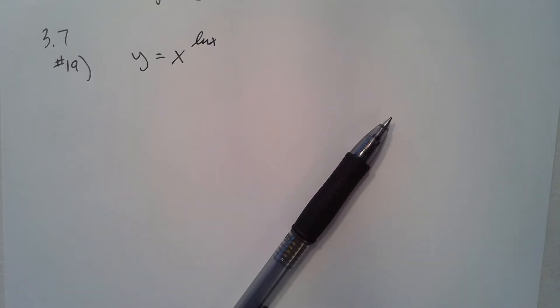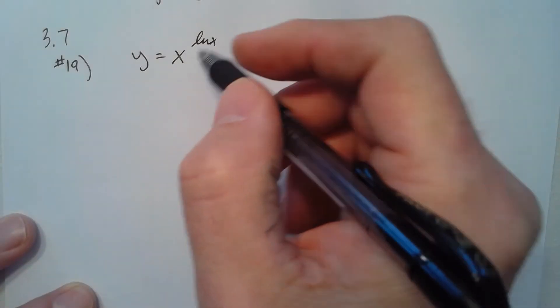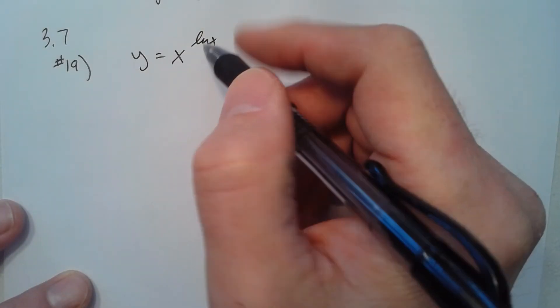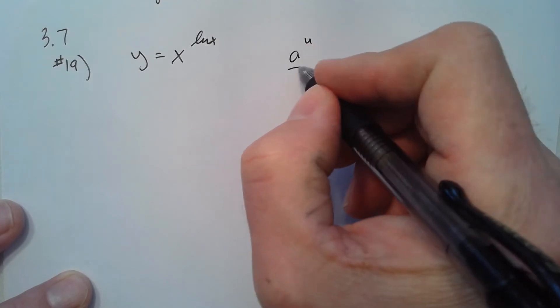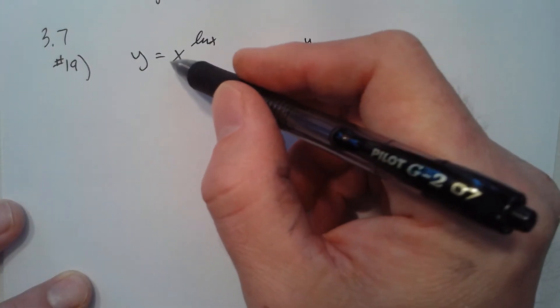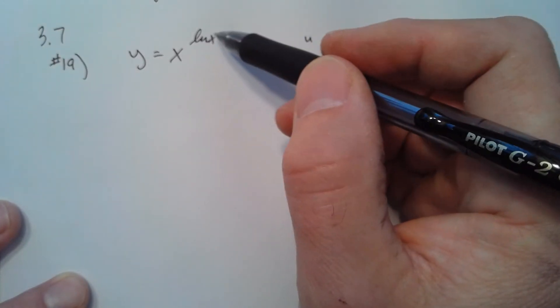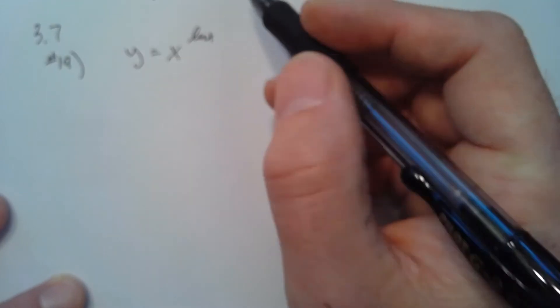3.7 number 19, finding the derivative. So this is not an a to the u, because a to the u implies that the base is a constant. We have a variable to a variable. So anytime we have a variable as a base and some variable as an exponent, the first step is to take the natural log of each side.